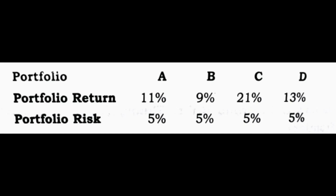In another example, there are four portfolios — portfolio A, portfolio B, portfolio C, and portfolio D — with the same level of risk but different portfolio returns. Here, portfolio C is the efficient portfolio, which gives the maximum return at the same level of risk. Portfolio A, portfolio B, and portfolio D are inefficient portfolios.